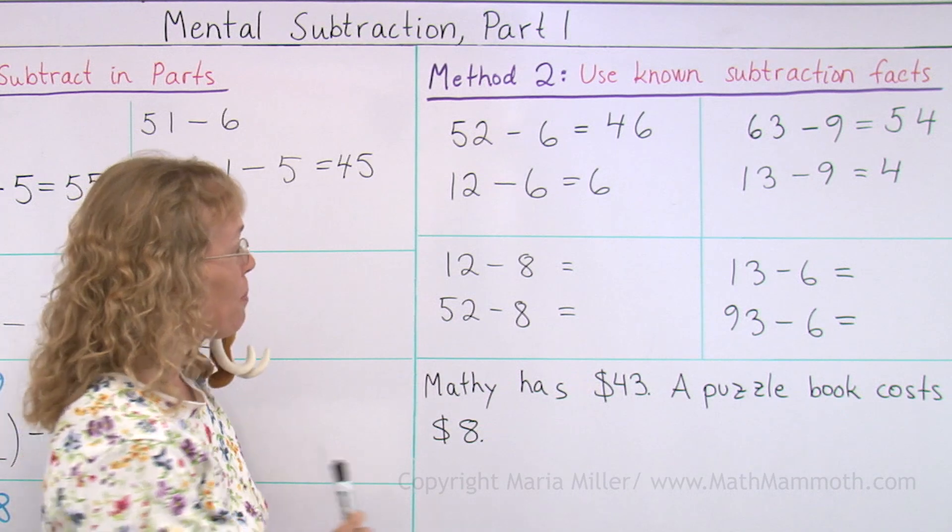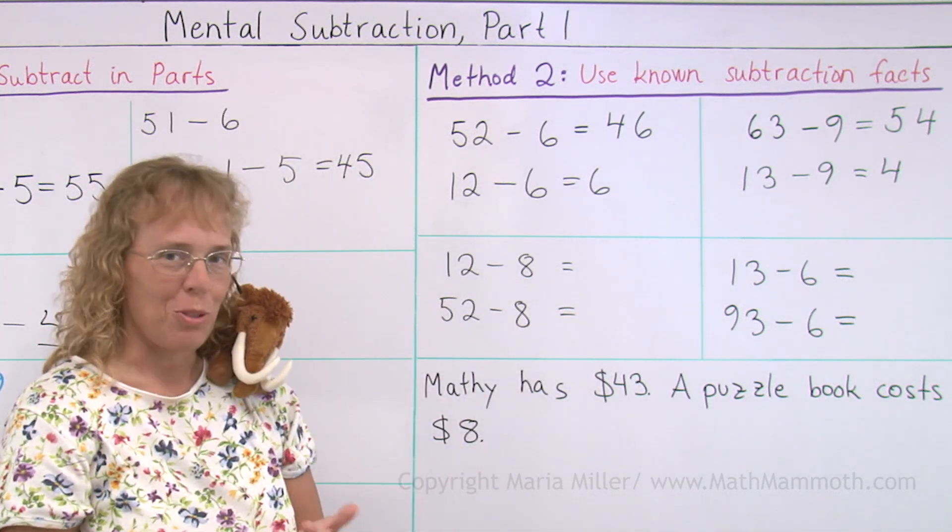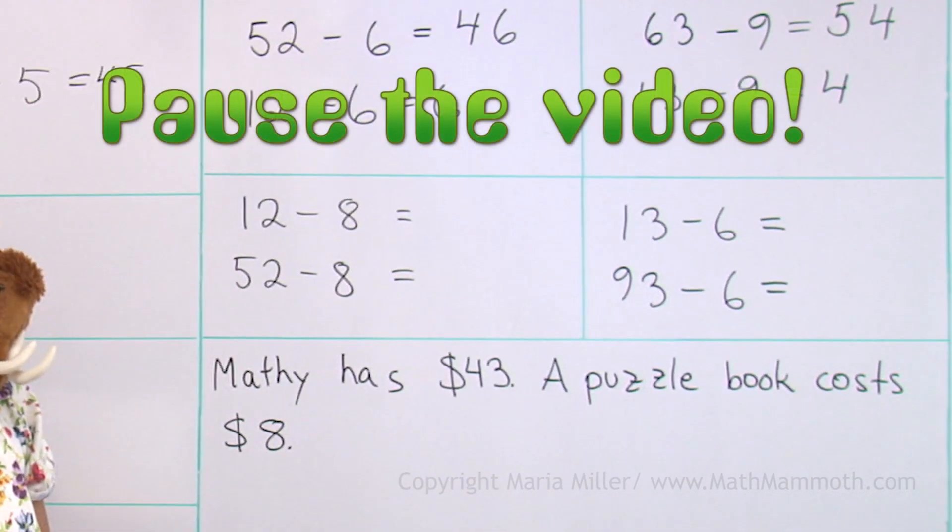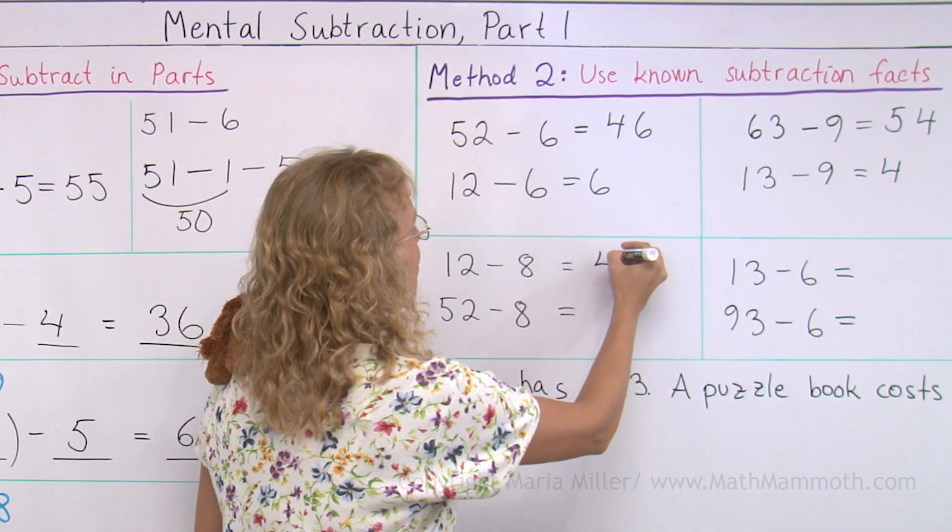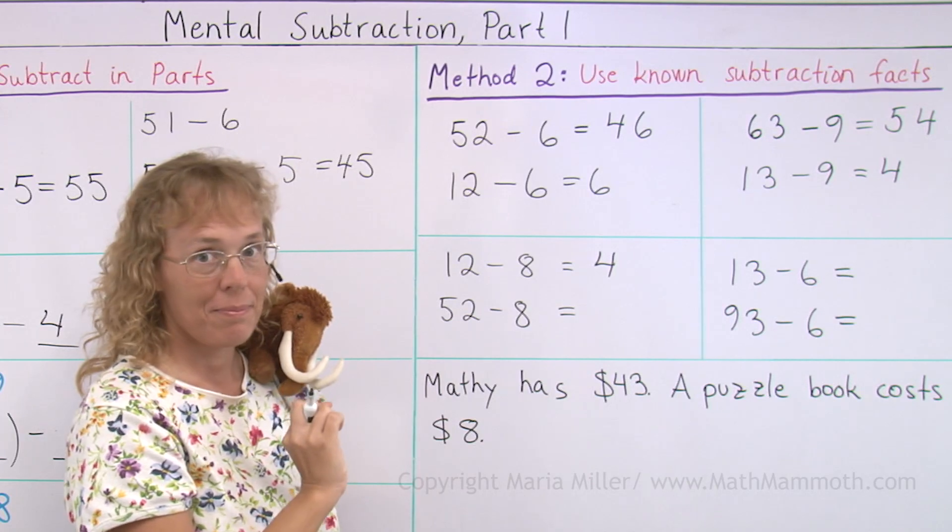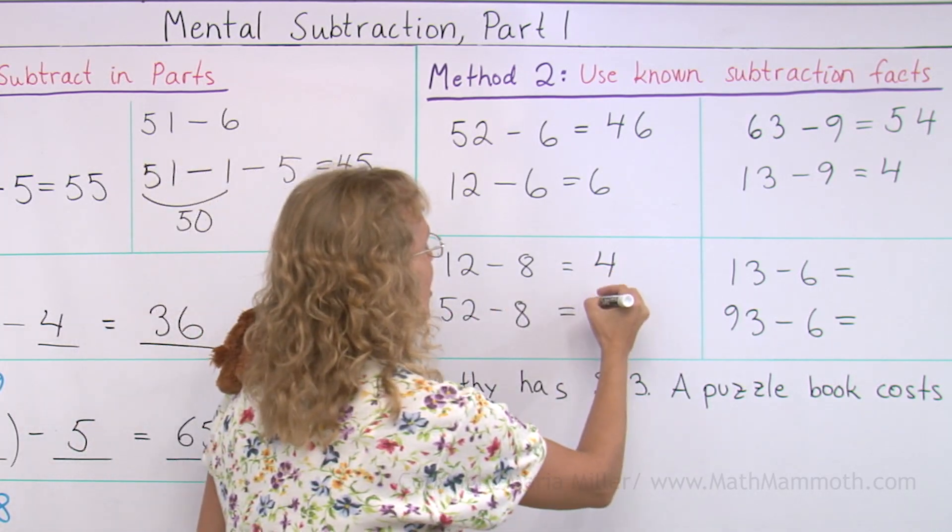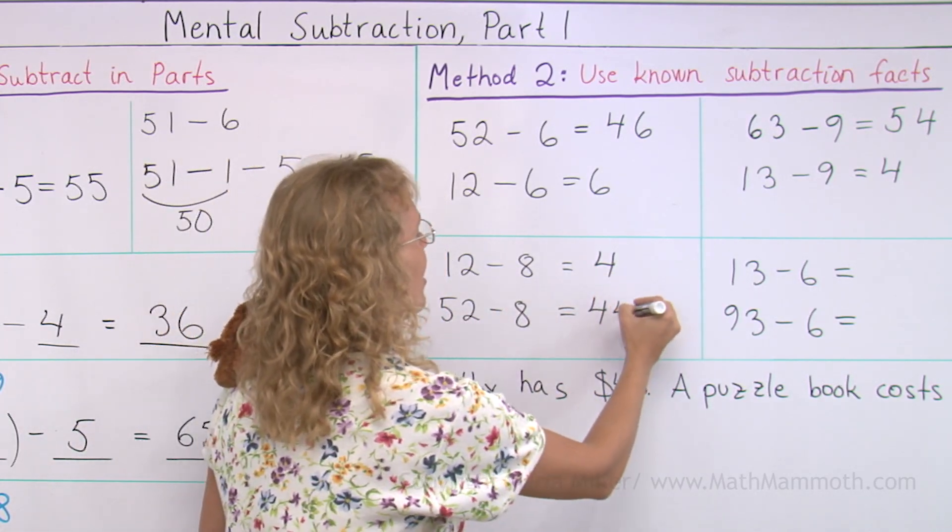Let's practice that a little now. Over here. Try it on your own. 12 minus 8. 4. So this one, in the previous 10, 40s, and ending in 4.